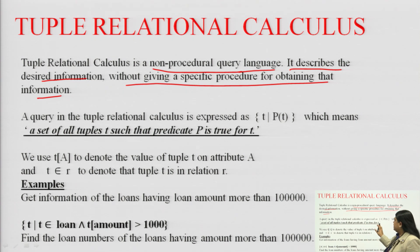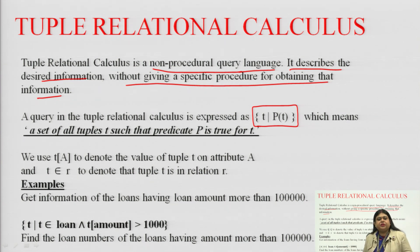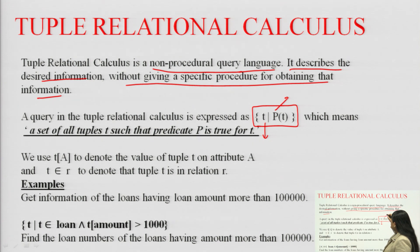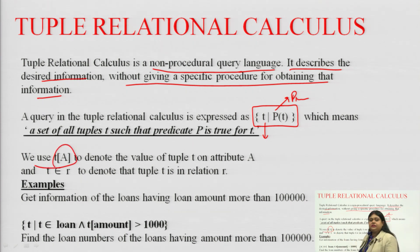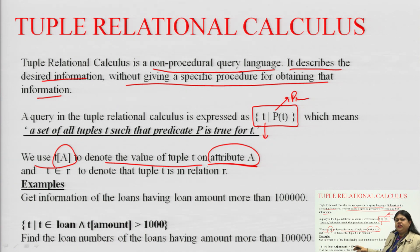A query in tuple relational calculus is expressed using a set of tuples t and a set of predicates p. When we write t[a], it denotes the value of tuple t on a particular attribute a. For example, if we have a student database, we can have the student name as that particular attribute.